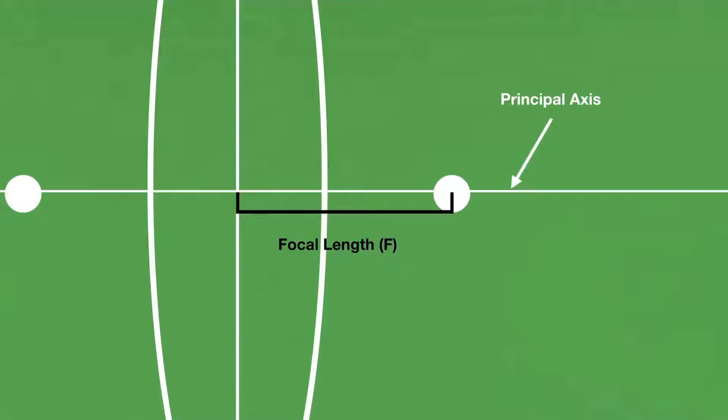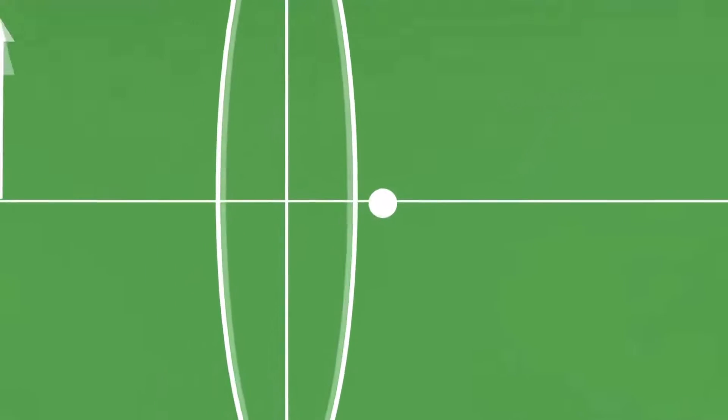To find out where the object's image will appear, you have to trace some rays of light emanating from the object and see where they intersect. I find it easiest to go from the top, so let's start there.